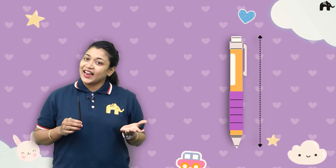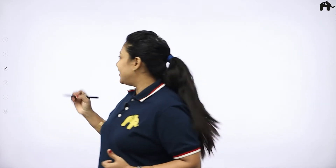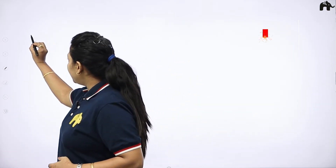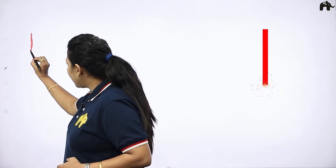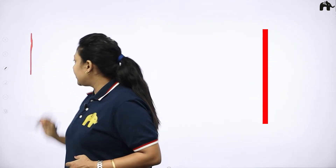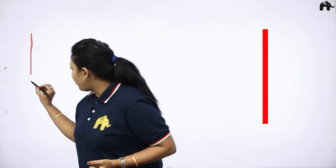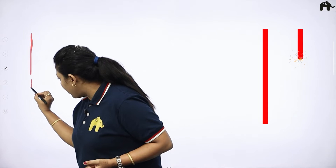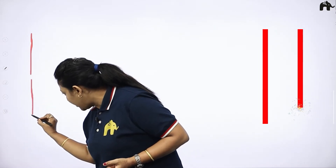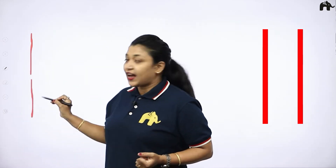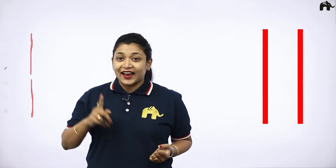Let's draw standing line, children! Everyone take out your pencil and draw with me. From the top, draw a straight line. Let's try again — from the top, draw a straight line. So this is our standing line!